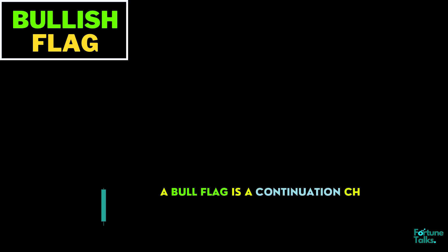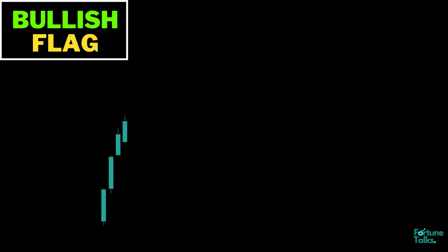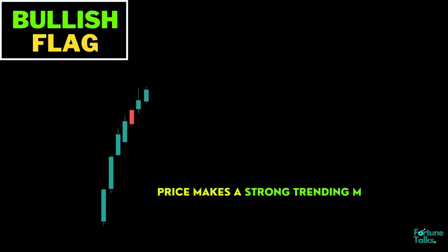A bull flag is a continuation chart pattern that signals the market is likely to move higher. The price makes a strong trending move higher, which means the range of the candles are more bullish than usual.